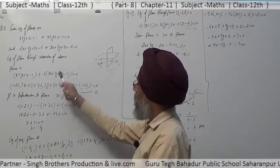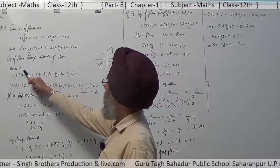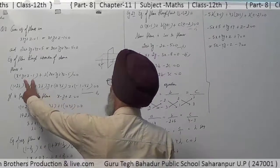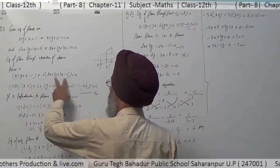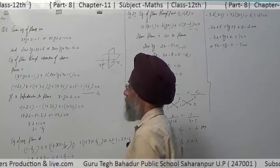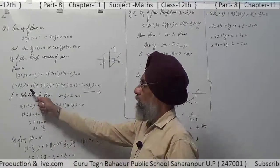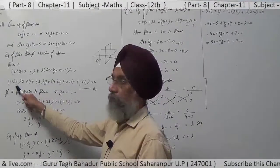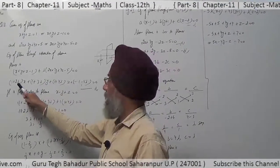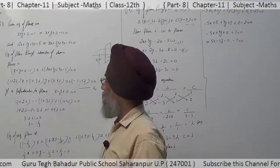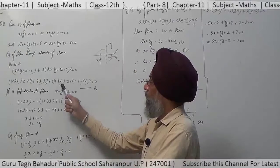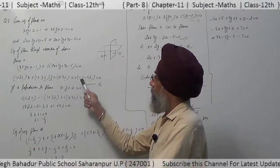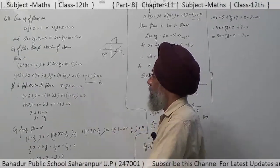The equation of a plane through the intersection of the above planes is given by the first plane plus lambda times the second plane. Arranging the coefficients of x, y, z and the constant, it becomes (1 + 2λ)x + (1 + 3λ)y + (1 + 4λ)z + (-1 - 5λ) = 0.